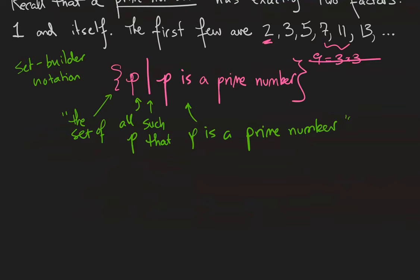Here's another example. Let's take the set V of vowels in our alphabet. We'll exclude Y. So we have A, E, I, O, and U. That's in roster notation.